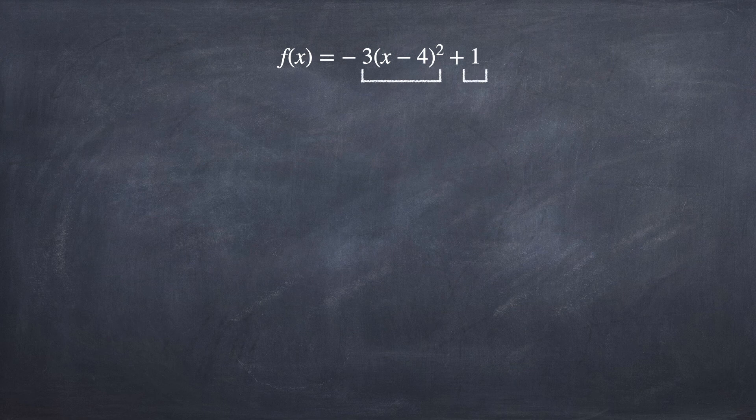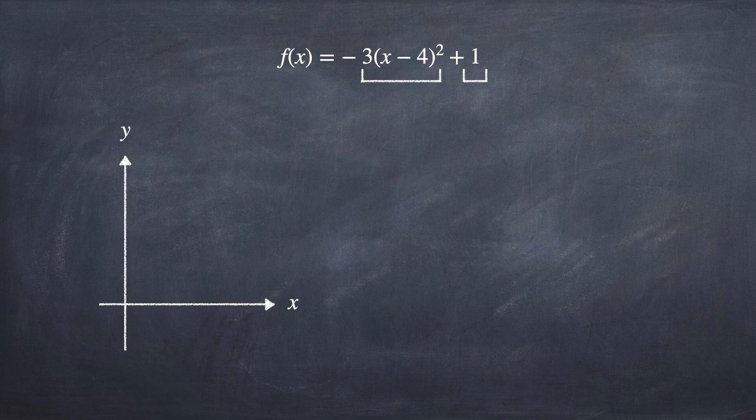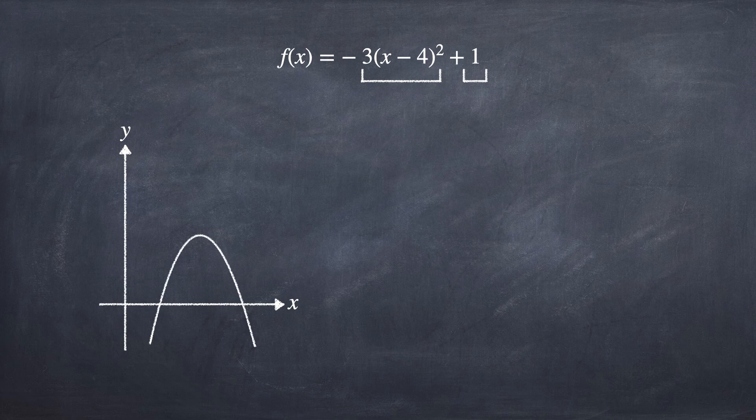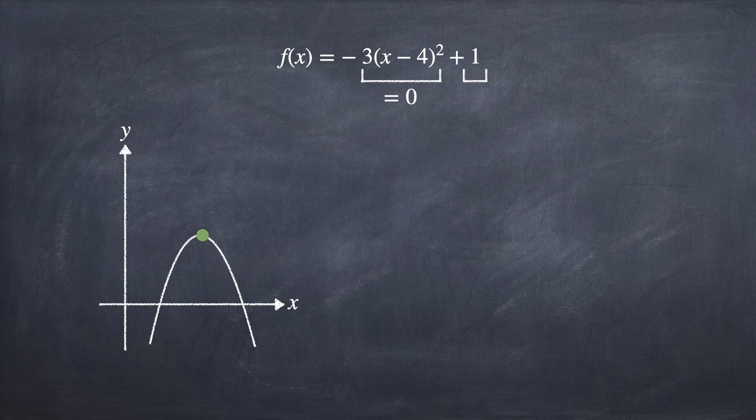Since a is -3, which is less than 0, this function will have an N-shaped curve with a maximum point.